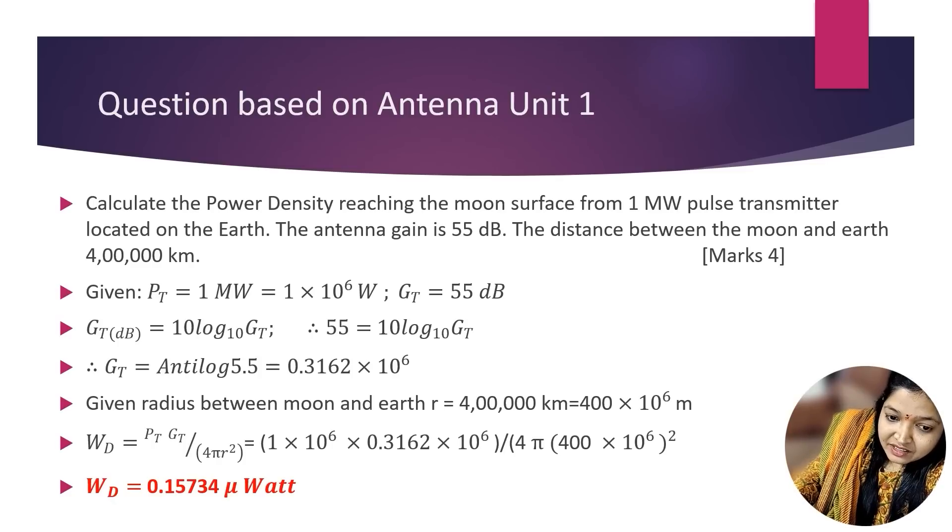To solve this numerical, the important formula is power density Wp = (Pt × Gt)/(4πR²). For this entire solution, 4 marks are allocated.